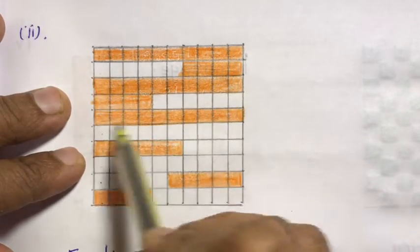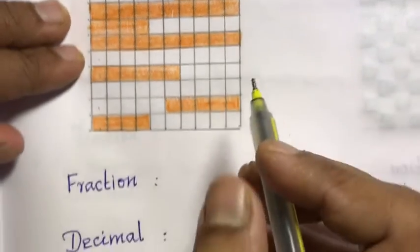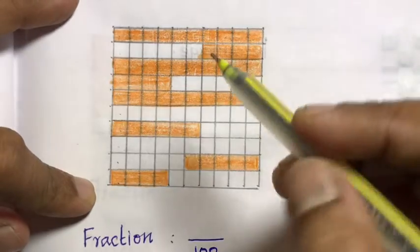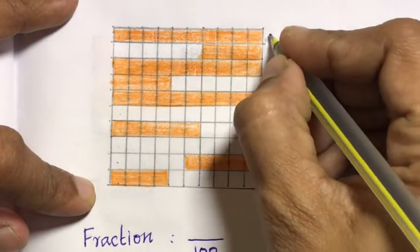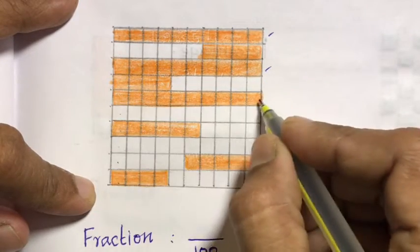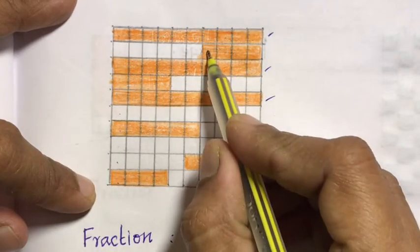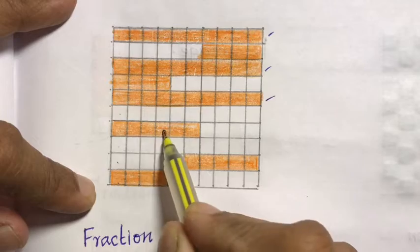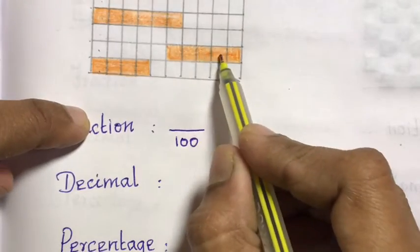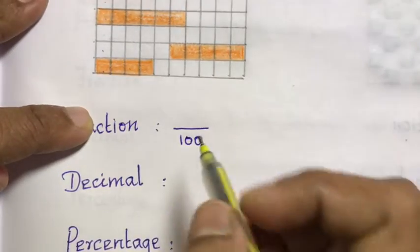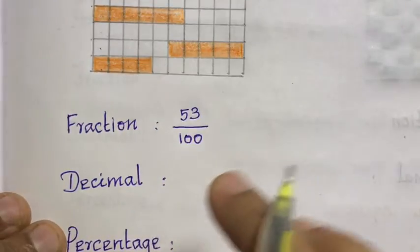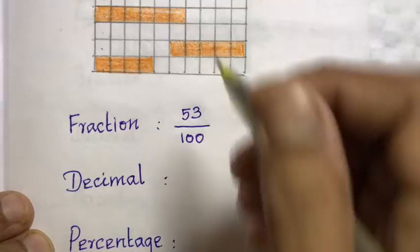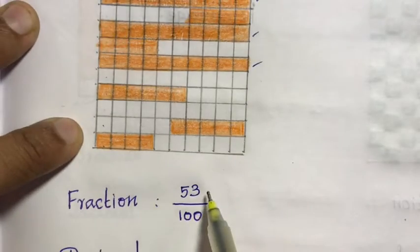Counting the colored squares: 10, 20, 30, 40, 50, 60, 70, 80, 90, 100... and continuing: 31, 32, 33... up to 53. So there are 53 colored squares. The fraction form is 53 by 100.